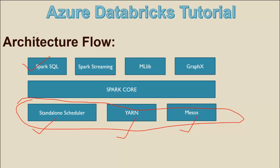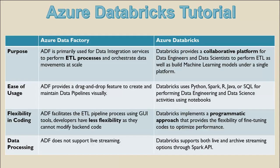Next is the ML library, which provides multiple types of machine learning algorithms that we can utilize. Last is GraphX for graph processing. So the architectural flow is: at the bottom we have the cluster, in the middle Spark Core handles task scheduling and storage access, and above that we have Spark SQL, Spark Streaming, the ML library, and GraphX.